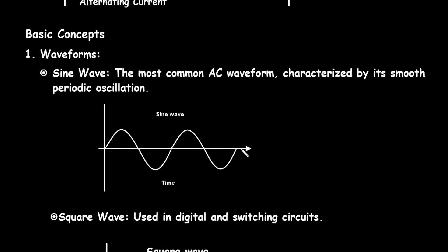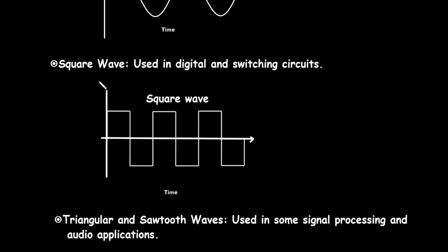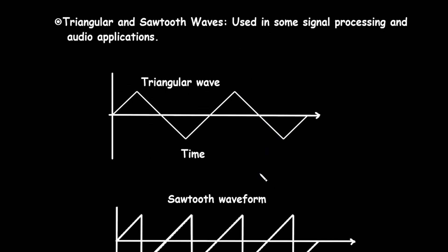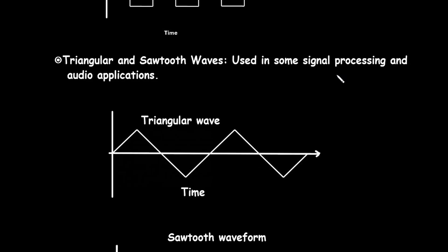On the X axis this is time, and on the Y axis it may be voltage or current. Then square wave, used in digital and switching circuits. Next is triangular wave, used in signal processing and audio applications.